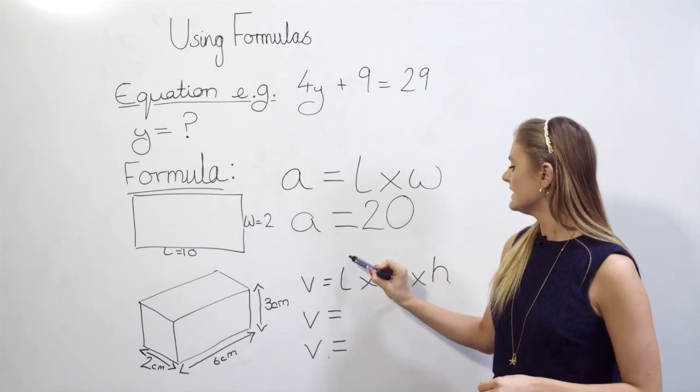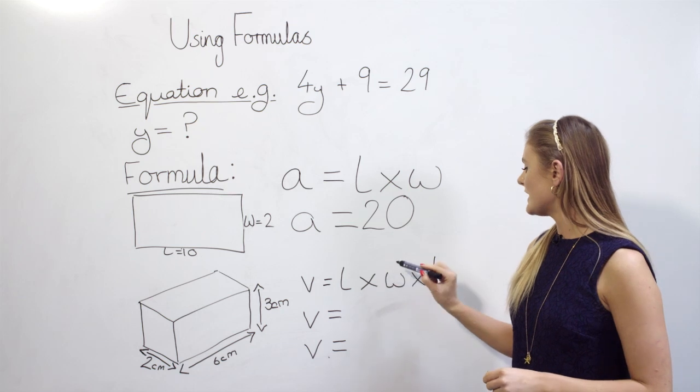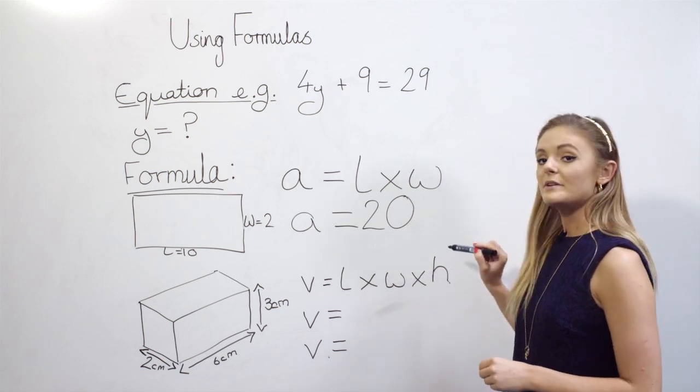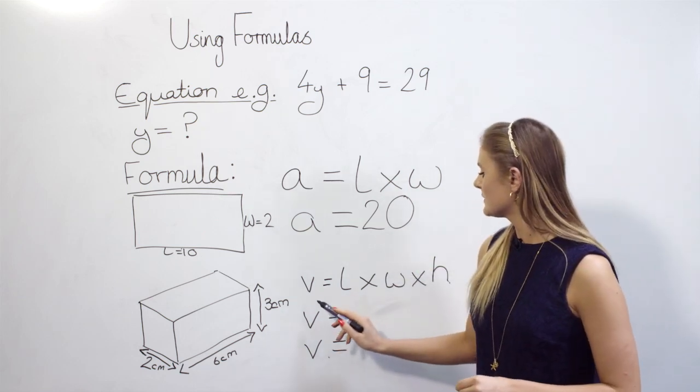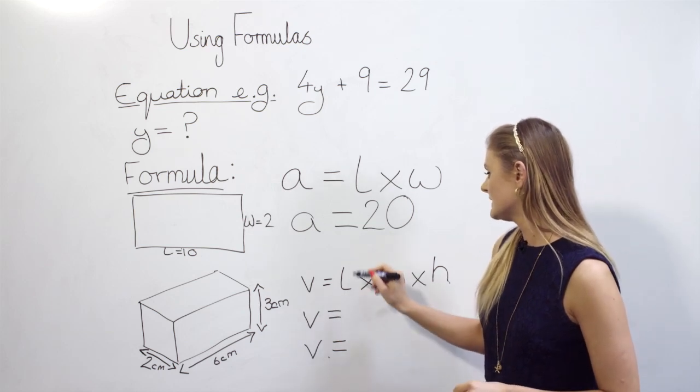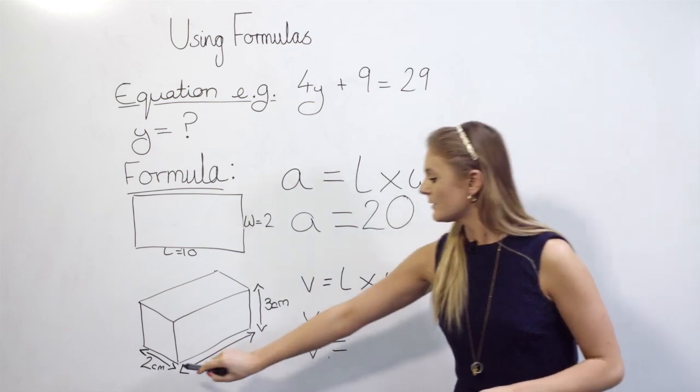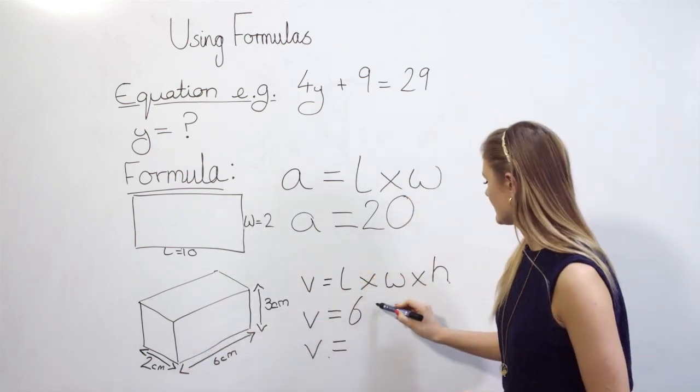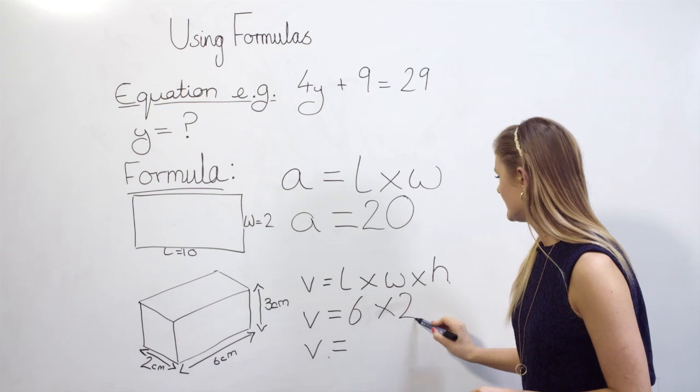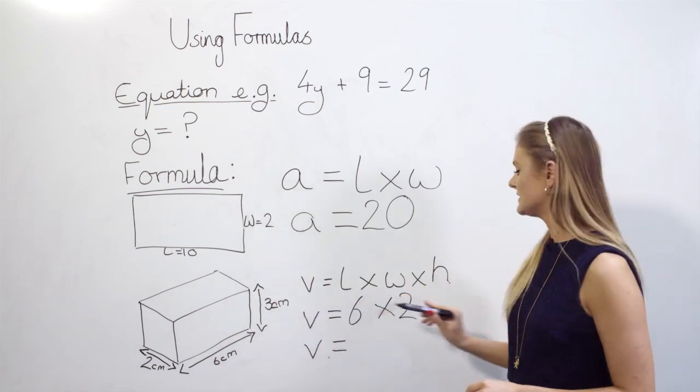The formula for this is the length times the value of the width times the value of the height. So the volume equals the length, which is 6, times by the width, which is 2, times by the height, which is 3.